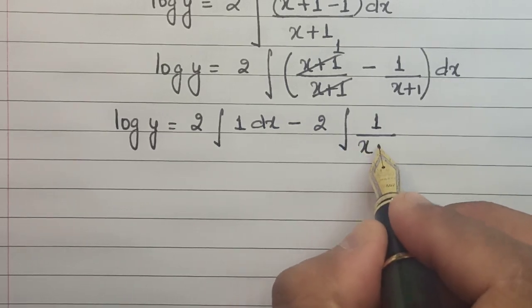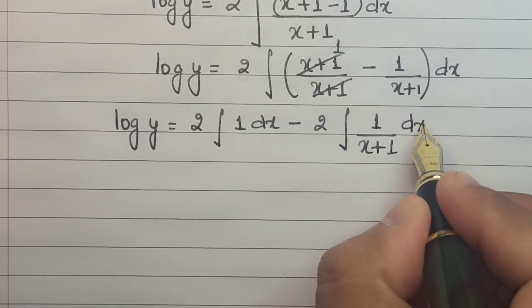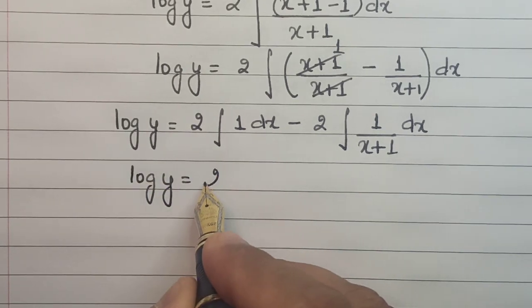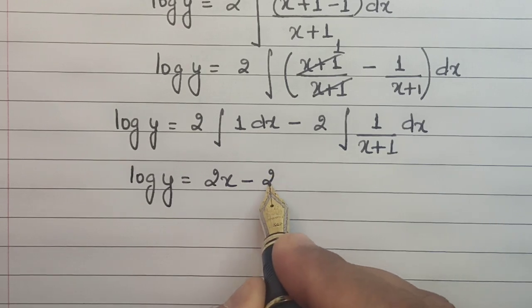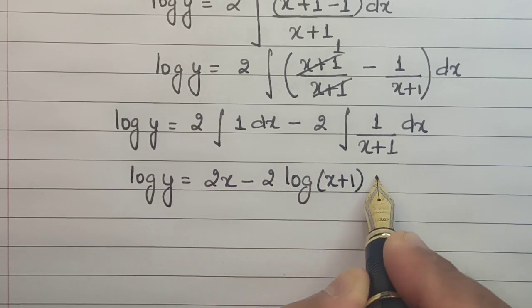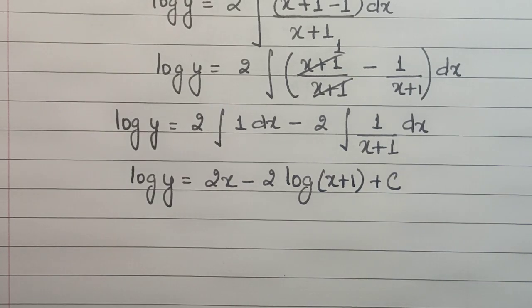So this becomes log y = 2x - 2log(x+1) + c. Let us shift the entire expression on the right hand side here.